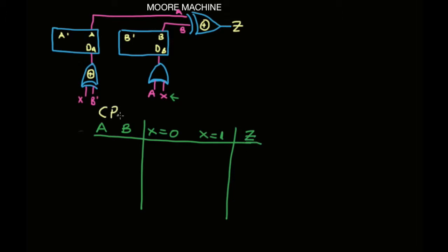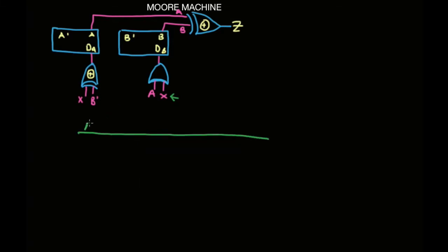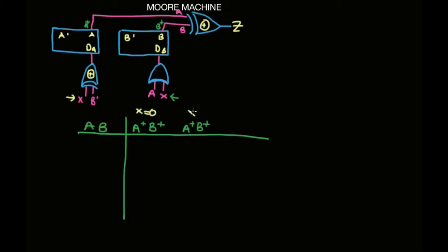Remember, A and B is our present state — I'm going to use PS — and this is our next state — I'm going to use NS. We have our A and B, which is our present state, and A plus, B plus, which is our next state. We call this A plus and B plus to signify the next state and differentiate it from the present state. We have two of those because X can be either 0 or 1. And then we have our Z, which is just our output.